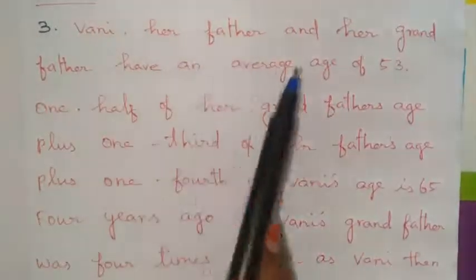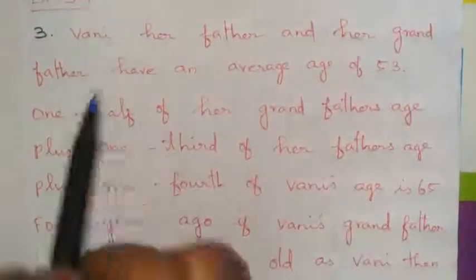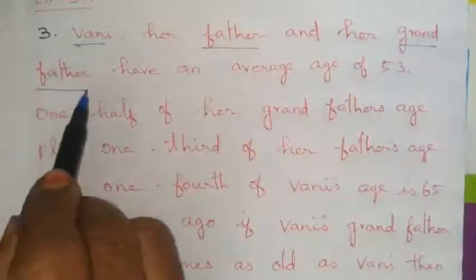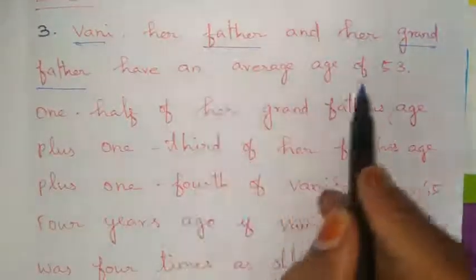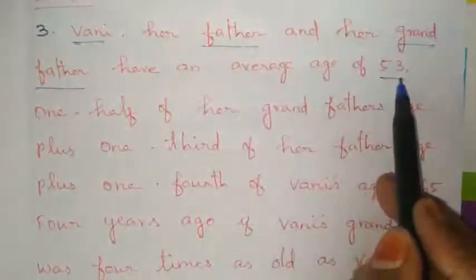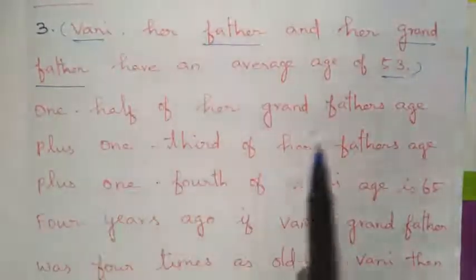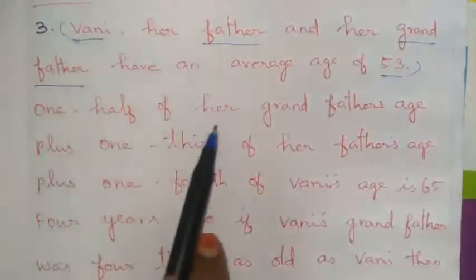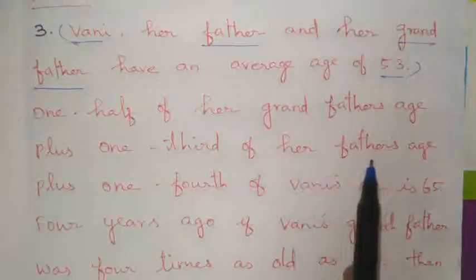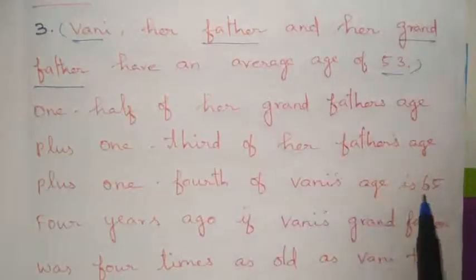Vani, her father, and her grandfather — there are three names. If the average age is 53, and one half of her grandfather's age, plus one third of her father's age, plus one fourth of Vani's age is 65.